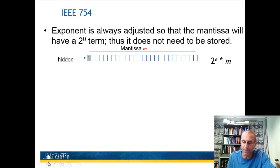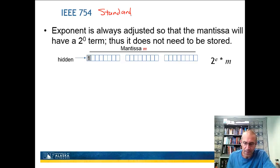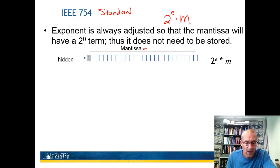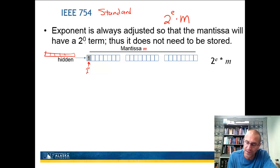The IEEE 754 standard governs floating point storage. The exponent is always adjusted so the mantissa has a 2 to the 0 term — a 'hidden bit' we don't need to store. My number stored is 2 to the e times the mantissa, where the mantissa is a summation of values of 2 to various powers. We can always adjust the exponent so the mantissa is one-point-something, meaning 2 to the 0 plus additional terms. This hidden bit lets us save one bit of storage. The exponent part is stored as a straightforward integer.